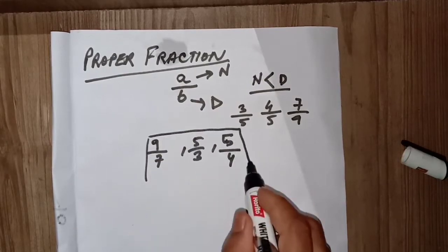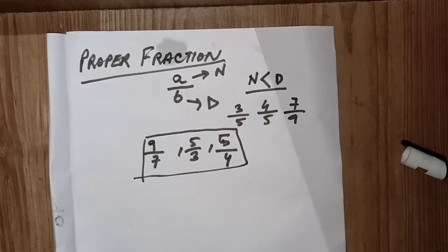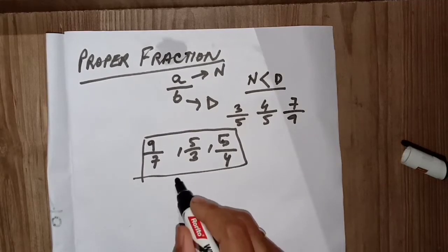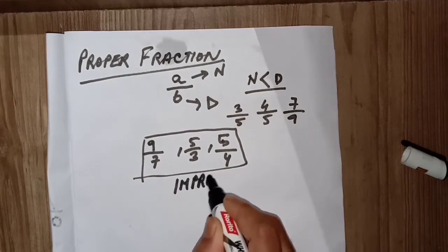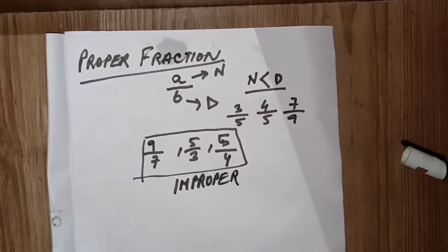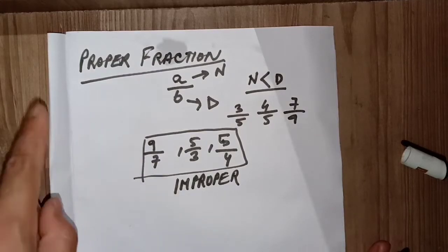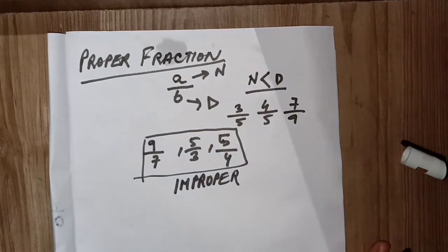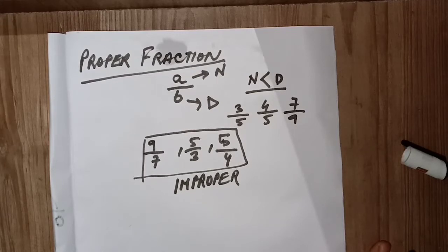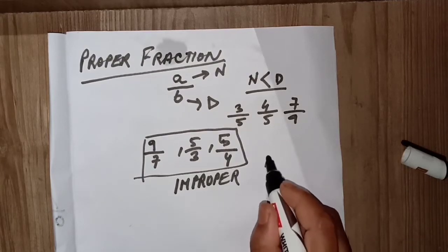If the reverse happens — fractions like nine by seven, five by three, or five by four, where the numerator value is more than the denominator — those fractions are known as improper fractions. In proper fractions n is less than d; in improper fractions n is greater than d.